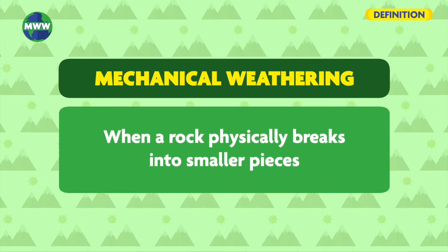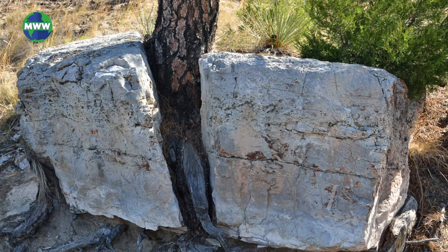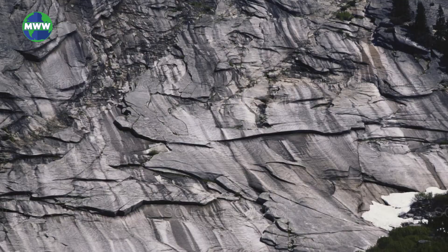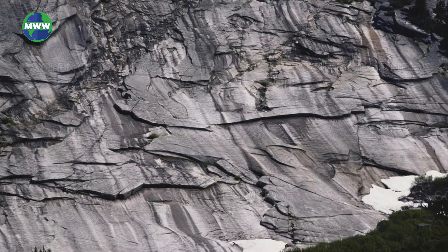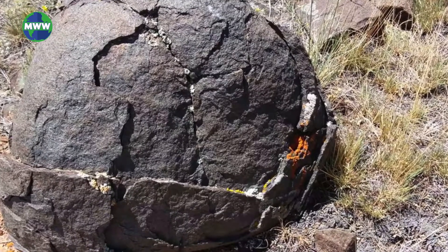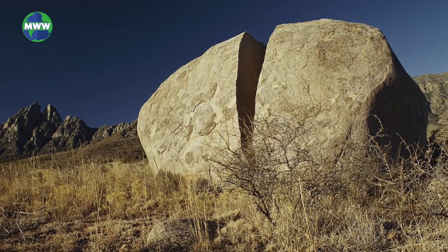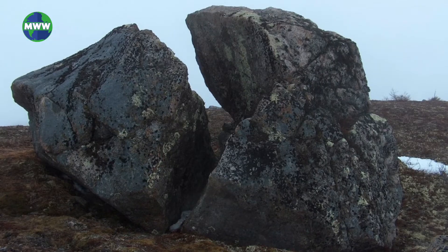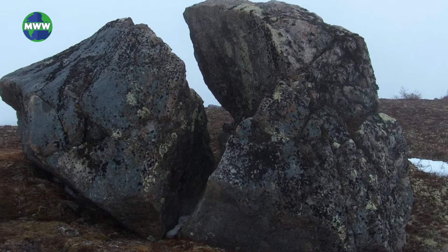Mechanical weathering is when a rock physically breaks into smaller pieces. This can be caused by plants, the sun, or frost. Plants are tough and can grow through rock, breaking them apart. Sun heats the surface of rocks, causing them to exfoliate or flake into small pieces of sediment. Water fills cracks in rocks and can freeze, splitting them apart. This is known as frost wedging.